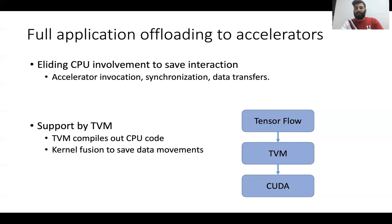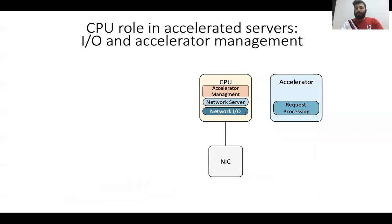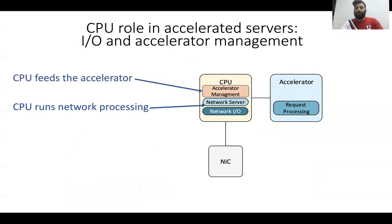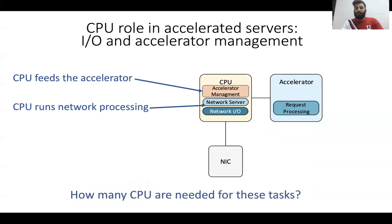But doing only that is not sufficient to get rid of the CPU from the system. So why is the CPU still needed? In network servers, the CPU is used for two reasons: first, to run the network processing — receiving requests from the network and sending responses back to the client — and also for managing the accelerator and transferring data between the accelerator and the CPU. We should know how many CPUs are needed to perform these simple tasks.